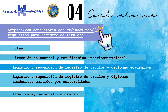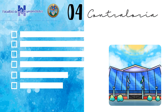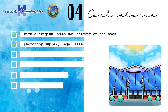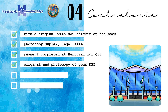Choose your time and date, complete your personal information, and download your constancia. On the date you set for your registration, bring: your título original with the SAT sticker on the back; a legal-size photocopy of both sides of your título; payment completed at Banrural — 455 quetzales; original and photocopy of your DPI; your RTU and NIT; and finally, your phone number.